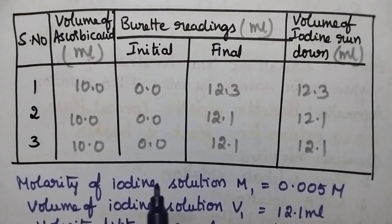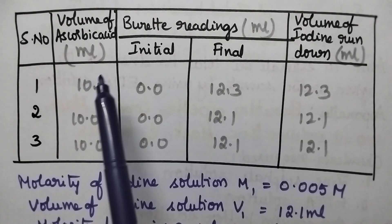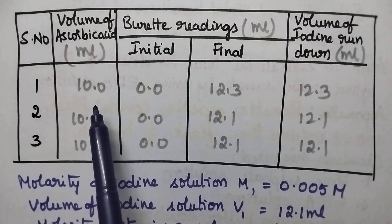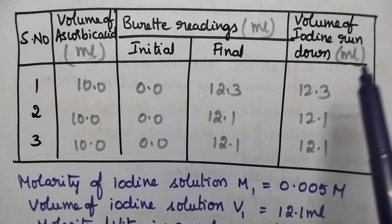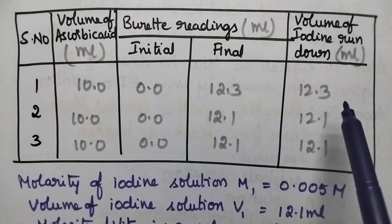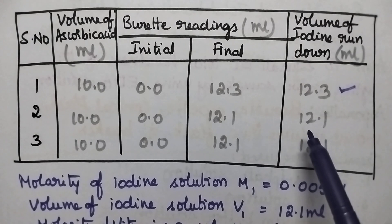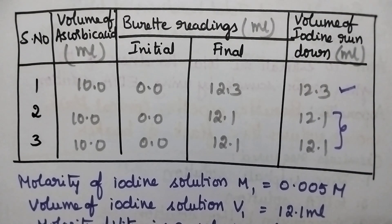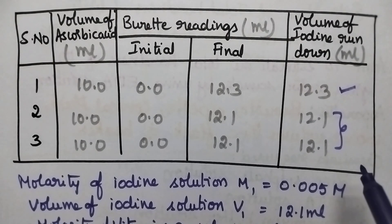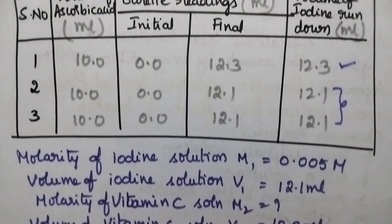The volume of ascorbic acid is taken as 10 ml and the volume of iodine solution rundown is 12.3 in the first titration and 12.1 in the second and third titrations. Two concurrent readings are obtained, which becomes the volume of iodine solution required for the titration.